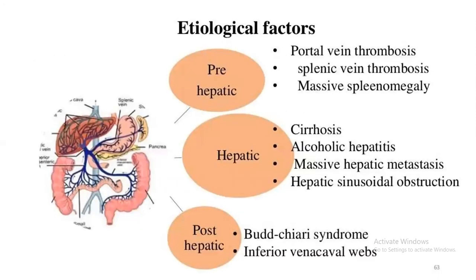Etiological factors include portal vein thrombosis, splenic vein thrombosis, massive splenomegaly, pre-hepatic and hepatic causes, cirrhosis, alcoholic hepatitis, massive hepatic metastasis, hepatic sinusoidal obstruction, and post-hepatic Budd-Chiari syndrome.